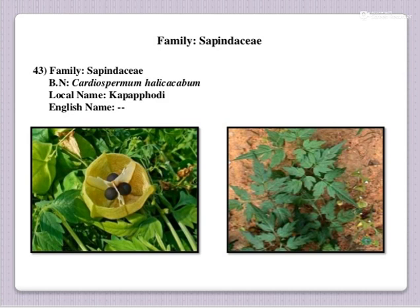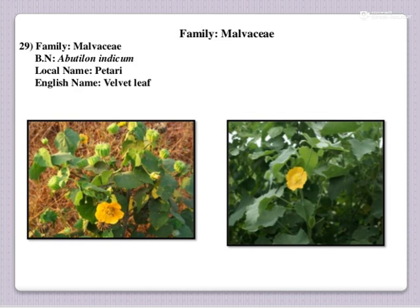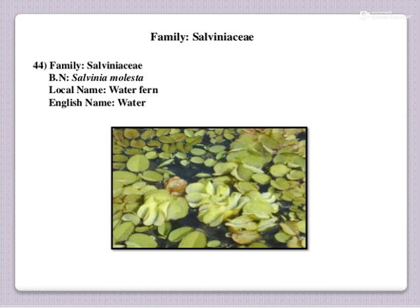Next is Petare. Local name is Petare. English name is velvet leaf and botanical name is Abutilon indicum under the family Malvaceae. The next one is water fern. English name is also water fern and botanical name is Salvinia molesta, family Salviniaceae. This is also an aquatic weed.